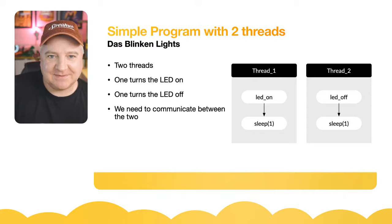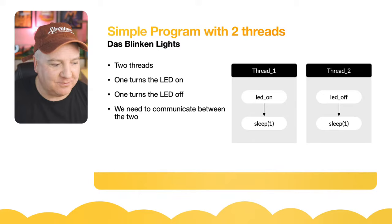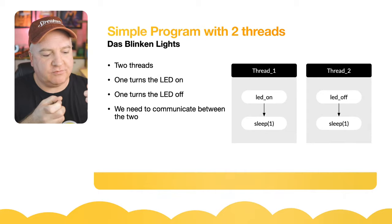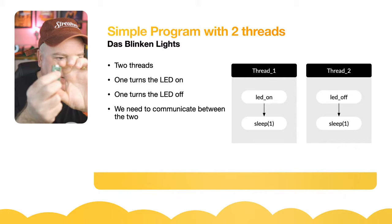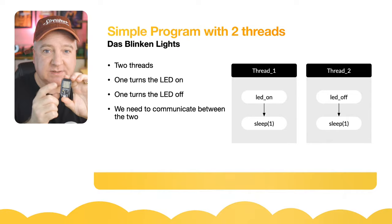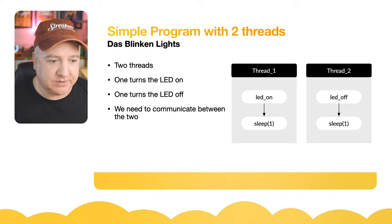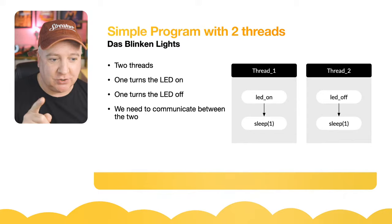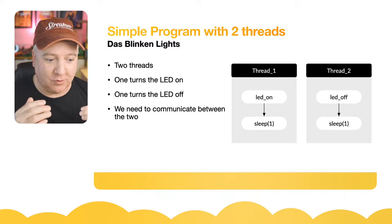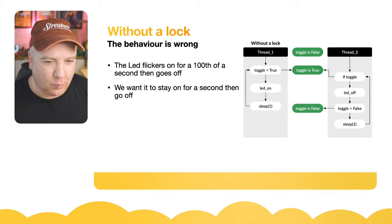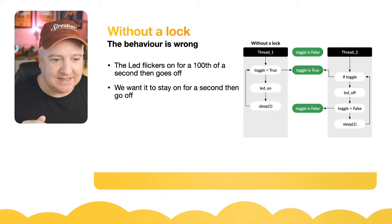We're going to write a blinking lights program - one of the first programs people learn on Arduino or Pico. Both boards have built-in LEDs: pin 25 on the Raspberry Pi Pico, pin 2 on the ESP32. We'll have two threads - one turning the LED on, the other turning it off - and we need a way to communicate between them so they don't overlap.